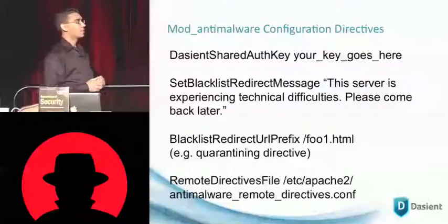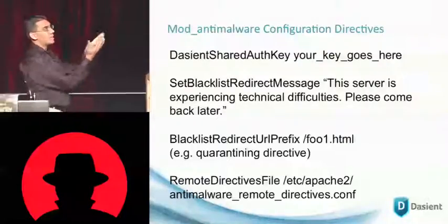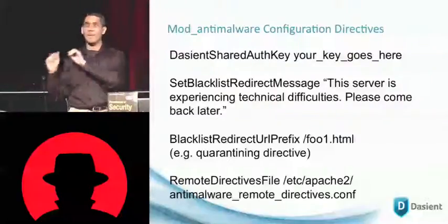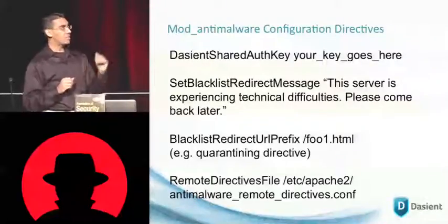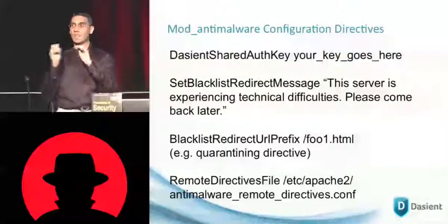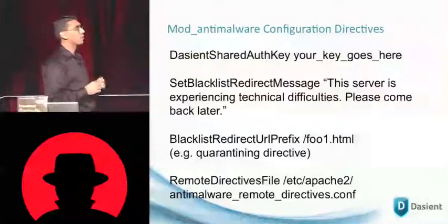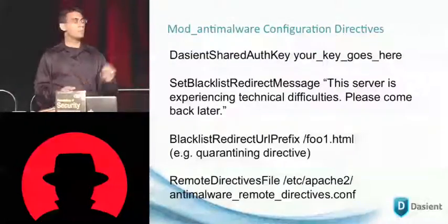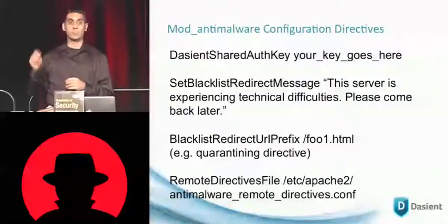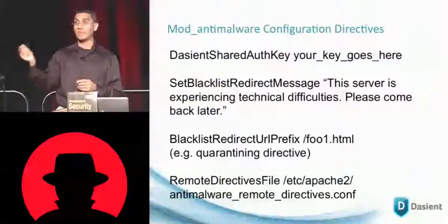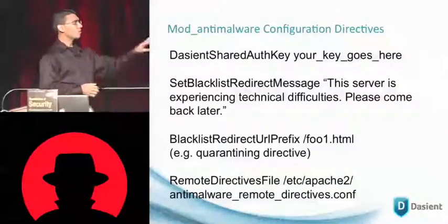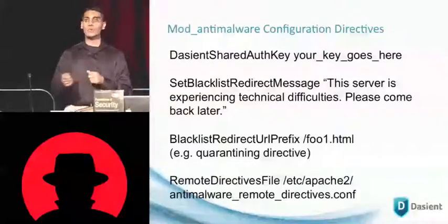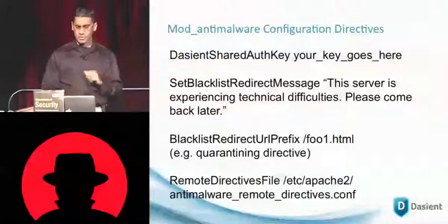The next configuration directive is blacklist_redirect_url_prefix. It specifies a prefix of URLs for which the regular infected page should not be served, and instead the blacklist_redirect_message should be served. So in this case, it's saying that foo1.html — instead of serving that page, serve the blacklist redirect message. blacklist_redirect_url_prefix is an example of a quarantining directive. Mod anti-malware supports a number of different quarantining directives. There are also directives that can quarantine a particular path in an HTML DOM if that's where the infection is. The final directive is remote_directives_file, which specifies the file on the web server into which all of these directives should be stored.